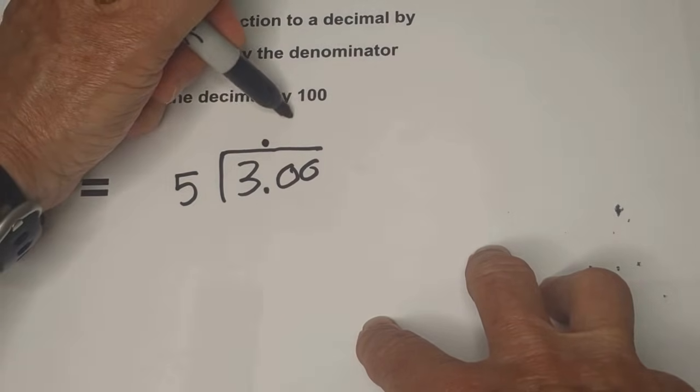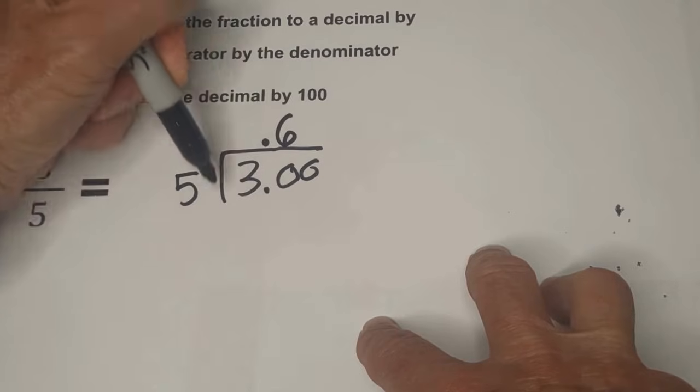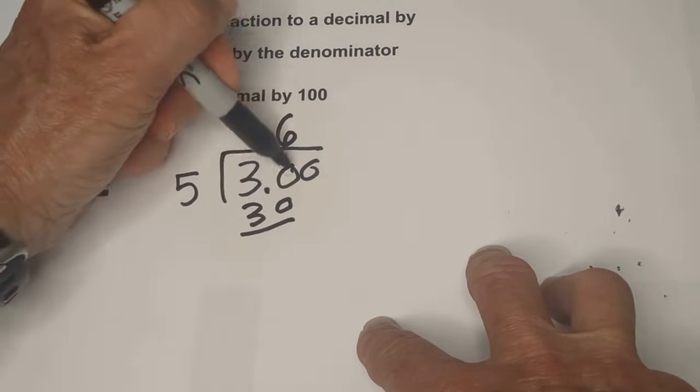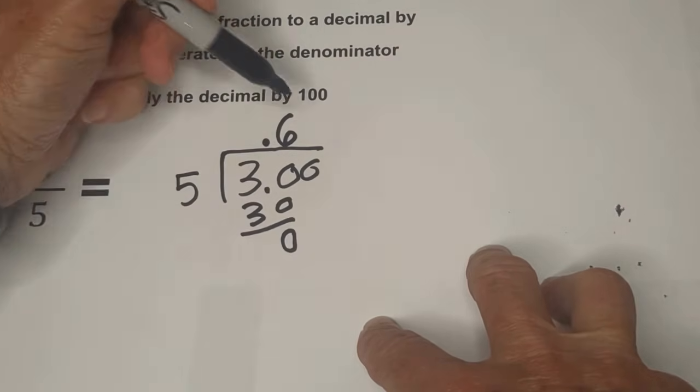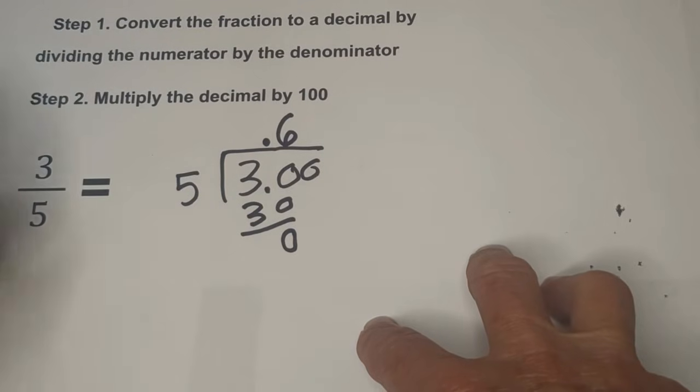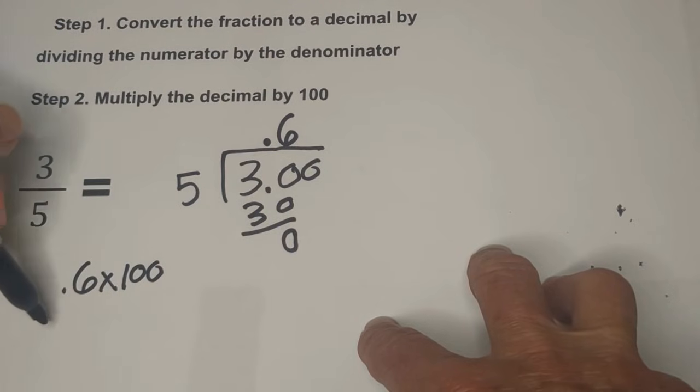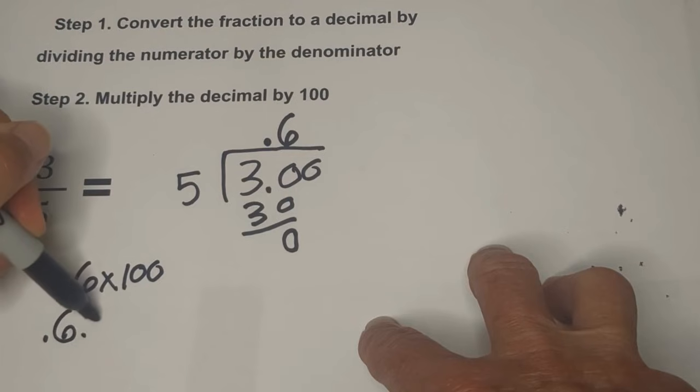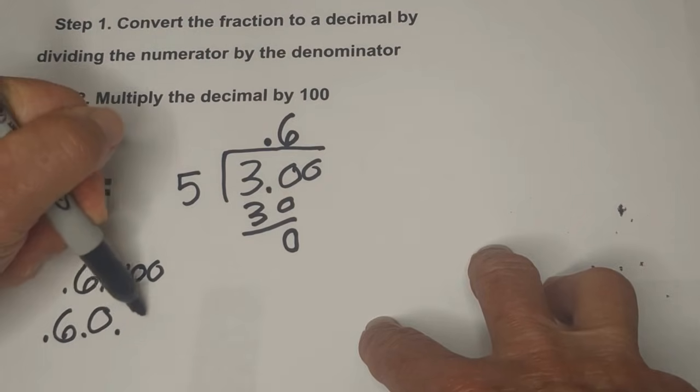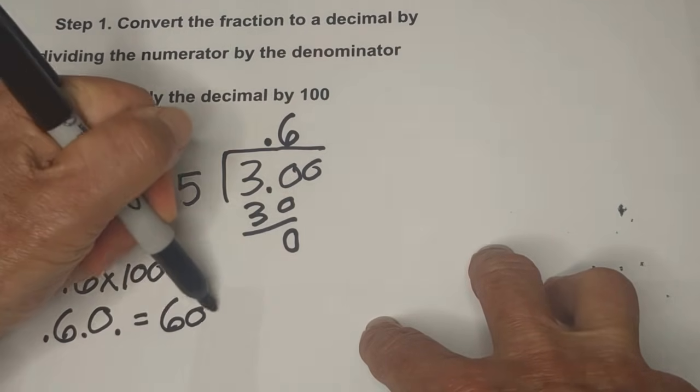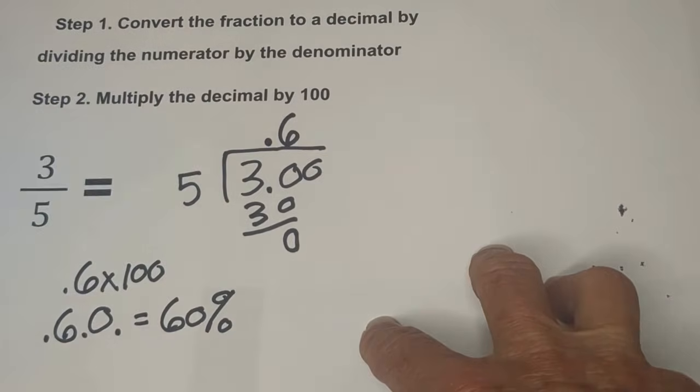Five goes into thirty six times. Six times five is thirty. When you subtract we have zero, so it is a decimal of six tenths. Now let's multiply six tenths by one hundred and we can just move the decimal two places. So we have one, two, so it equals sixty percent.